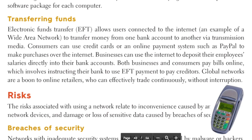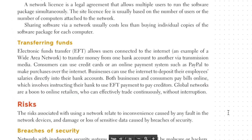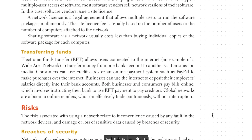Electronic funds transfer (EFT) allows users connected to the internet — an example of a wide area network — to transfer money from one bank account to another via transmission media. Consumers can use credit cards or an online payment system such as PayPal to make purchases over the internet. Businesses can use the internet to deposit employee salaries directly into bank accounts, and both businesses and consumers can pay bills online using EFT payments to pay creditors. Global networks are a boon to online retailers who can effectively trade continuously without interruption — as was certainly seen during the 2020 pandemic, which brought a huge shift in online retailing.